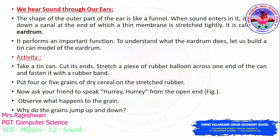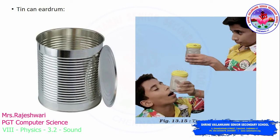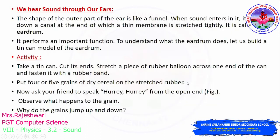To understand how the eardrum works, you can do an activity. Take a tin can or stainless steel can and stretch a rubber sheet or balloon over the open end. Fasten it tightly with a rubber band so it doesn't slip off. Then place four or five grains of dry cereal, salt, sand, wheat, or rice — anything available at home — on the stretched rubber sheet.